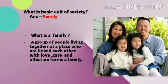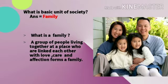What is a family? A group of people living together at a place who are linked to each other with love, care and affection form a family. There are many different definitions of family, such as a fundamental social group in society, typically consisting of one or two parents and their children, or a group of two or more people who are related to each other by blood, adoption, marriage, or fostering, and usually dwell in the same household. It is called a family.